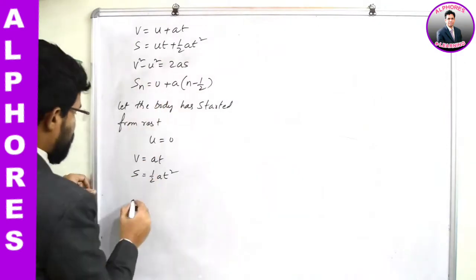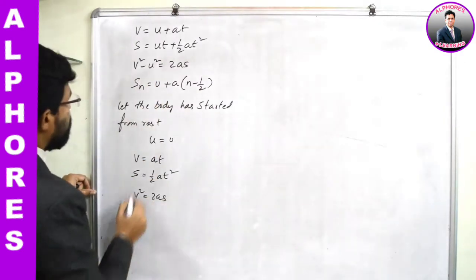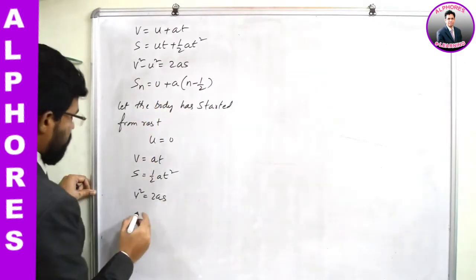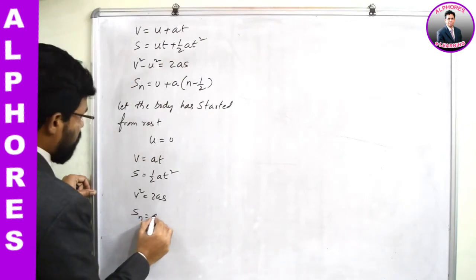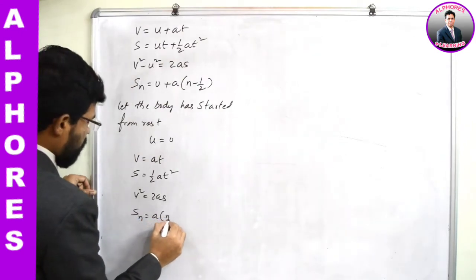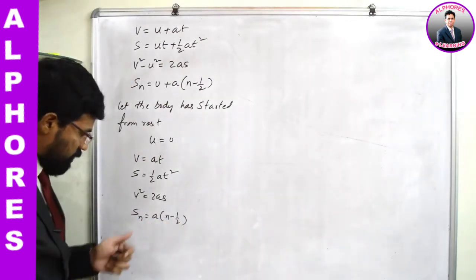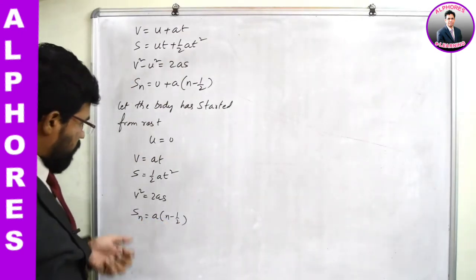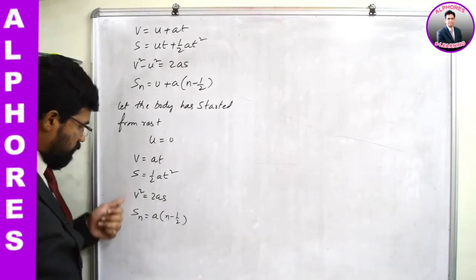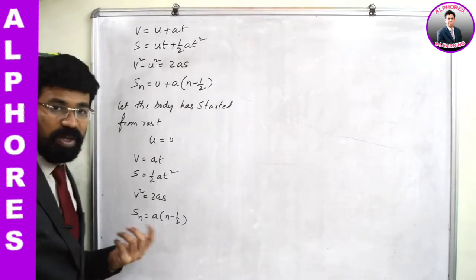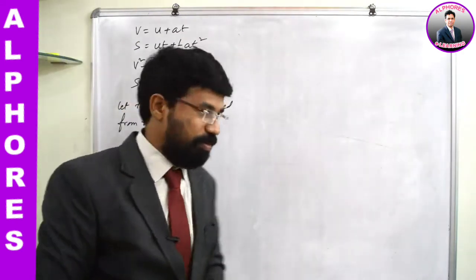The third equation becomes v² = 2as. And the fourth one: Sn = a(n - ½). Regarding initial velocity being 0, and the ratio between s and Sn, we have already discussed in the last session.